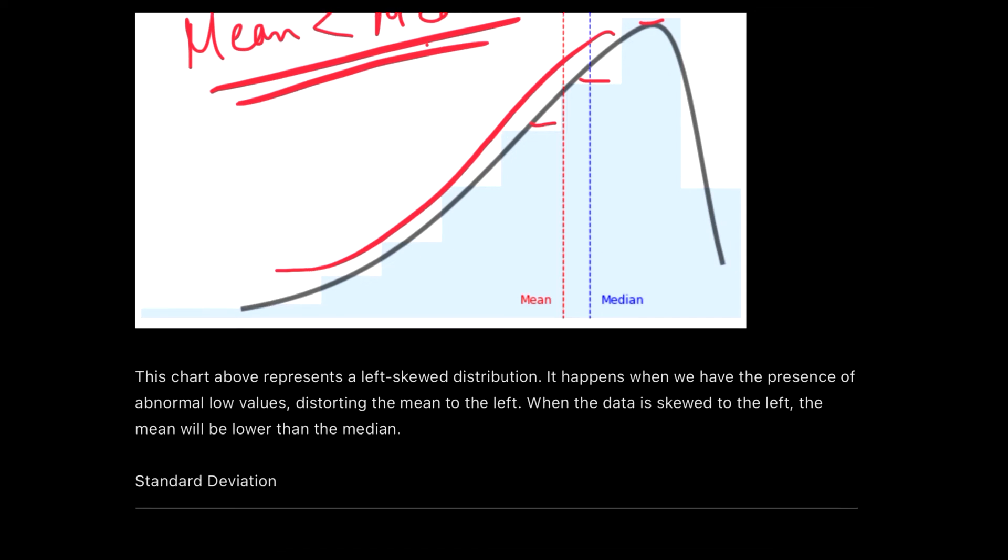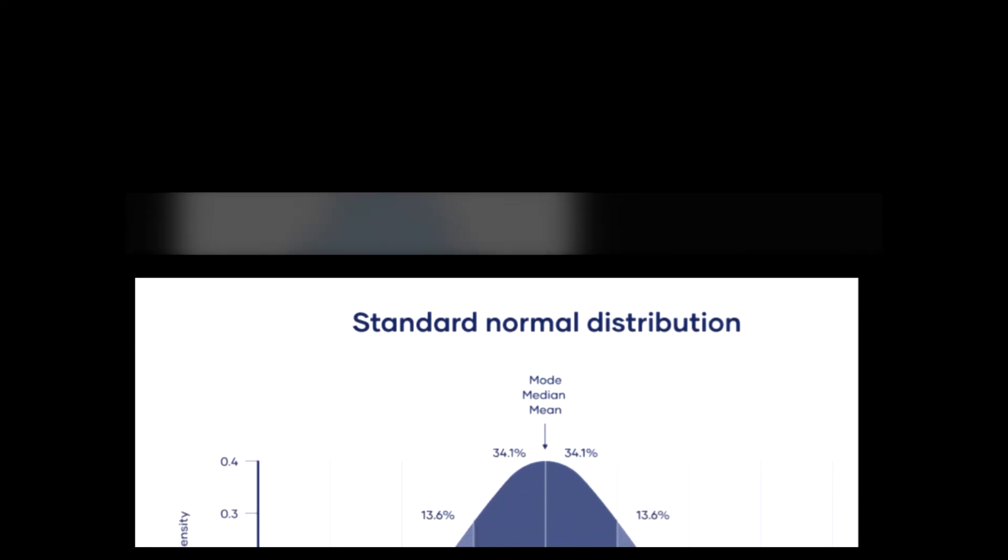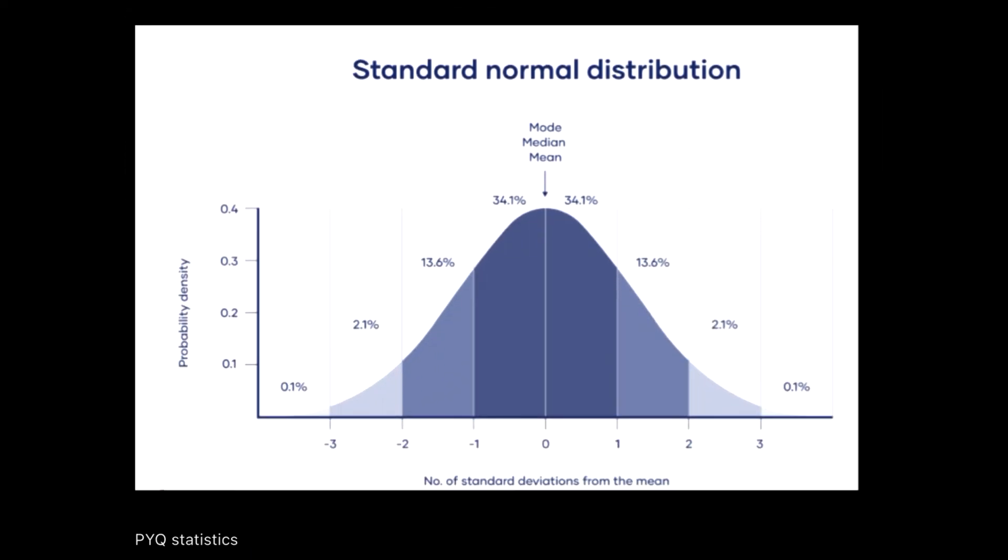Now we come to standard deviation. In standard deviation, you need to understand, I have given you one chart. You are not going to use any formulas. You just need to understand the meaning after which I will give you two past year questions. The first thing is standard normal distribution. Now, standard deviation is always seen from a particular point and generally that particular point is the mean.